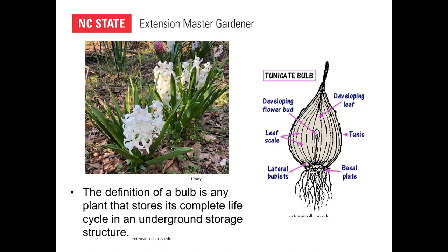These are hyacinths — you probably recognize those. This is why it's called a complete life cycle: you have the basal plate where the roots come from, the outer layers that look like an onion are food storage, and this little thing right here is the flower bud, with the main stem coming out the center. Most bulbs have what they call a tunica — the papery outer layer — but true lilies do not have that.